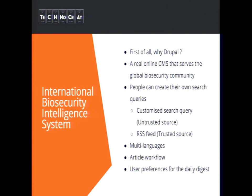It's a real online system that serves the biosecurity community. The system allows people to create their own search queries. We define two kinds of search sources: untrusted sources — mainly Google search results, where you don't really know if the information is genuine — and trusted sources, where researchers can submit RSS feeds from authorities, governments, or research entities. People can subscribe to RSS feeds and create their own search queries, and the system will search for them.